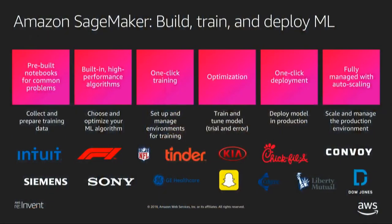The resurgence of ML we're seeing right now is pretty exciting because it enables predictive maintenance, recommendation engines like on amazon.com, fraud detection, and so many other use cases. Customers like Intuit, Siemens, Sony, Tinder, and Chick-fil-A are all coming to us with things they want to do. We'll talk a little bit about Tyson Foods and how they're using this later in the presentation.